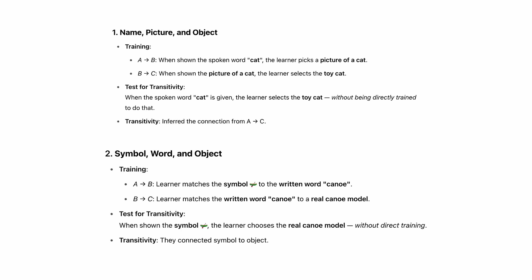For transitivity: when spoken the word 'cat,' the learner selects a toy cat; when shown the spoken word 'cat,' the learner picks a picture of a cat; when shown a picture of a cat, they select the toy cat. The emergent relation is when the spoken word 'cat' is given they select the toy cat — never trained before, but they just match those together. Similarly, a learner matches the symbol of a canoe to the written word 'canoe' and the written word to a canoe model; without training, they choose the real canoe model. That's the emergent relation.